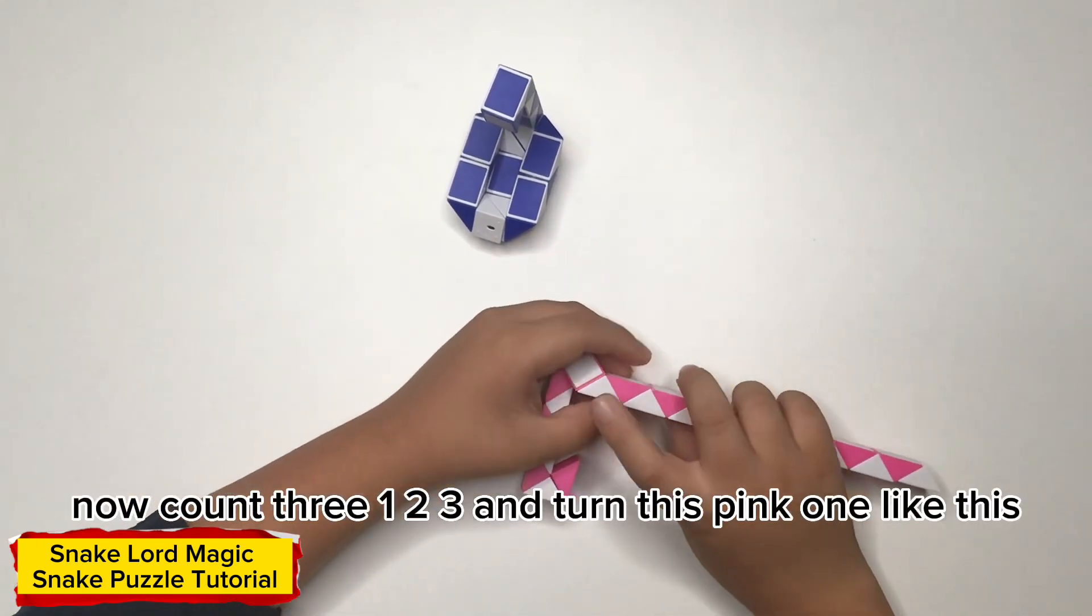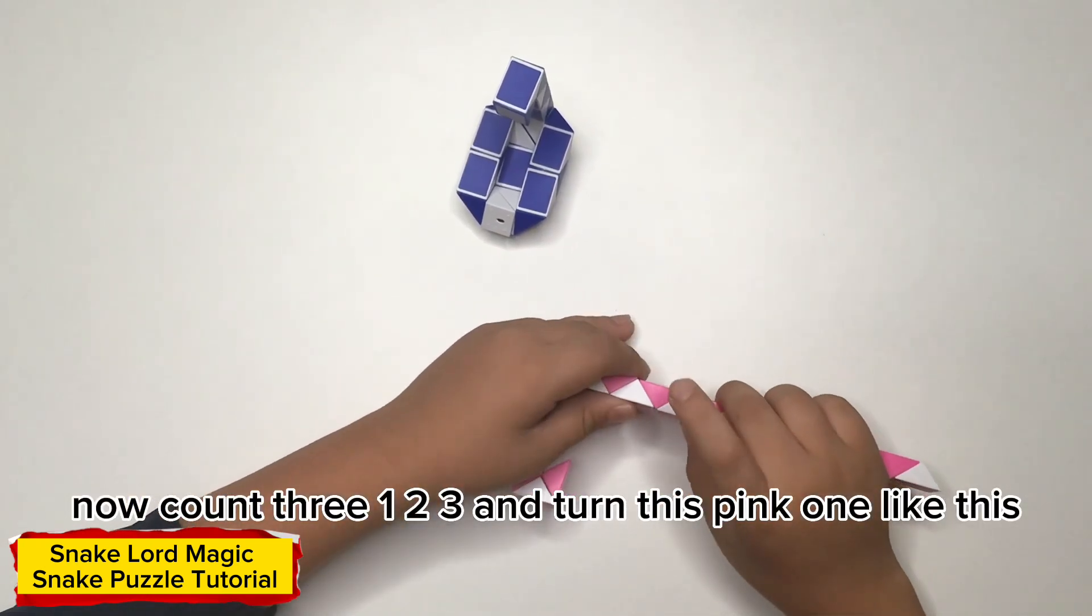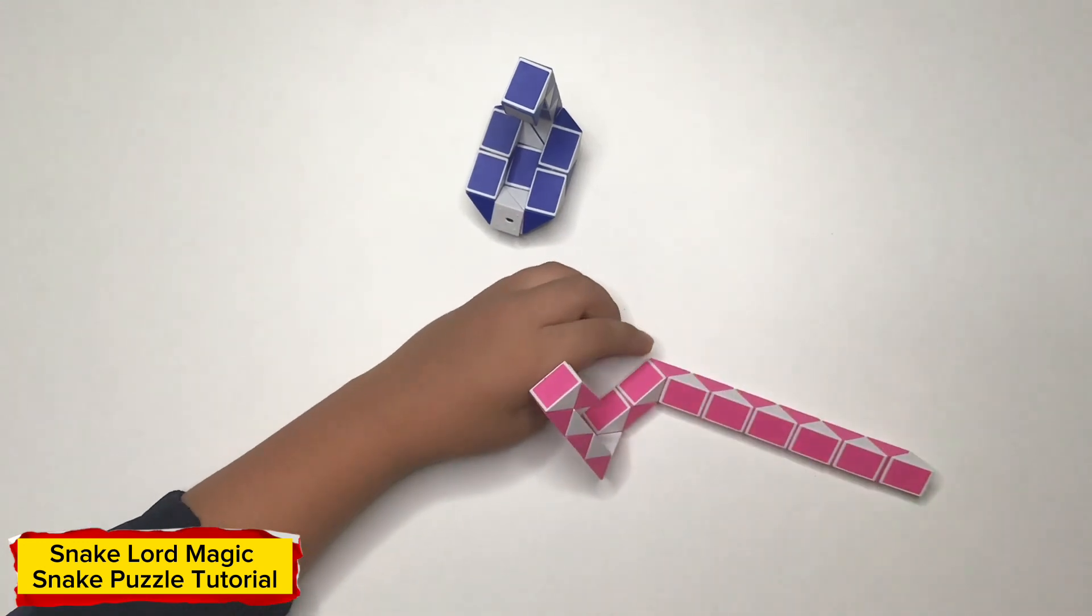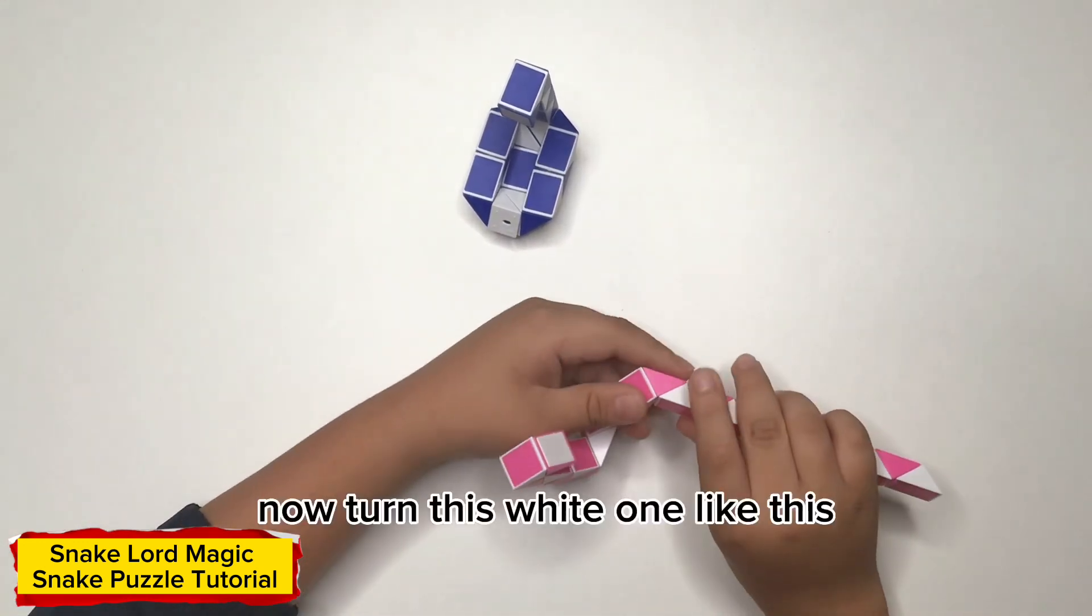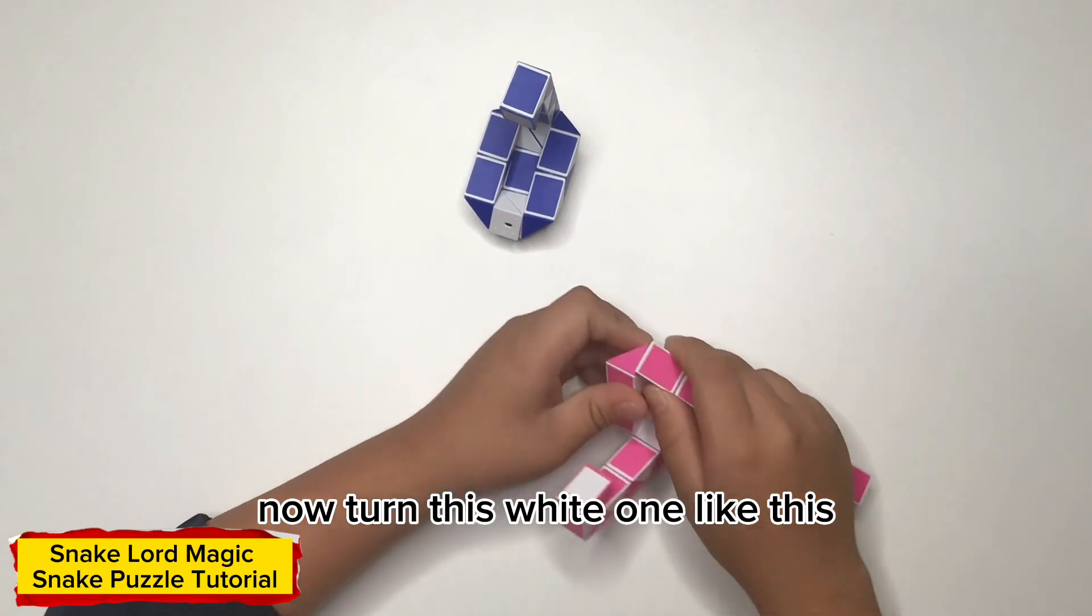Now count three: one, two, three, and turn this pink one like this. Now turn this white one like this.